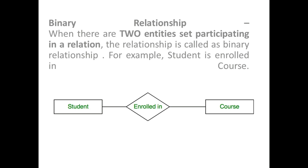Another type is binary relationship. When there are two entities participating in a relation, the relationship is called a binary relationship. For example, a student is enrolled in a course — here student and course are two entities and 'enrolled in' is one relationship.